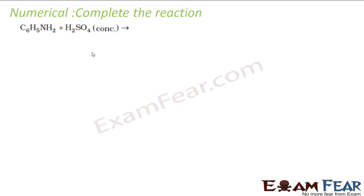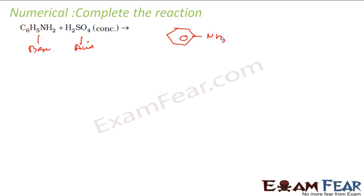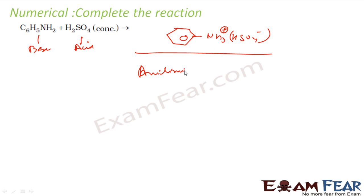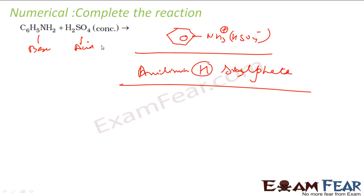The next reaction: C6H5NH2 (aniline) with sulfuric acid. This is a base reacting with an acid — they will form a salt: C6H5NH3+ HSO4⁻, that is anilinium hydrogen sulfate. This is a simple acid-base reaction.